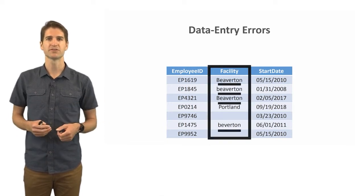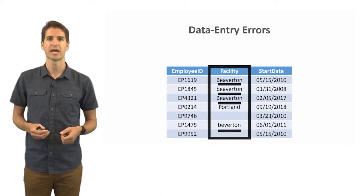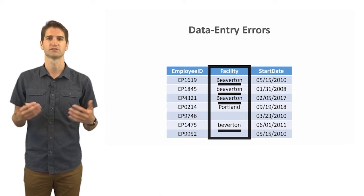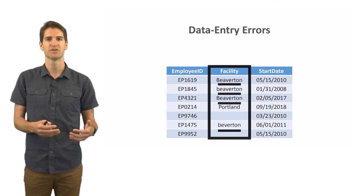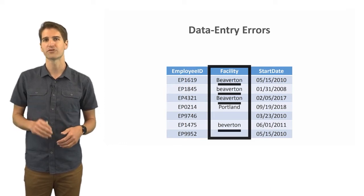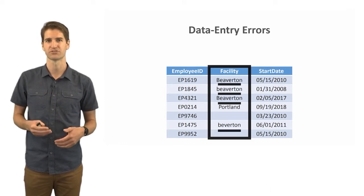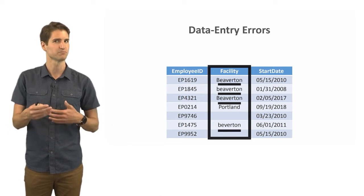You can see with the facility variable or column that we have Beaverton and Portland location. There's two different levels that we can see here for this facility, Beaverton and Portland. However, in reality we have four different levels. You might be asking, but we only have Beaverton and Portland.